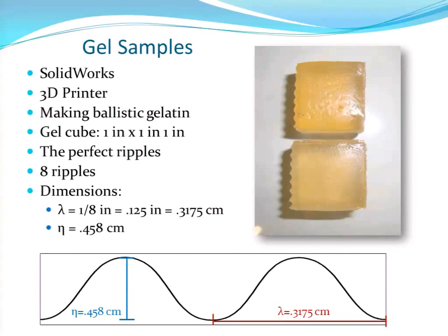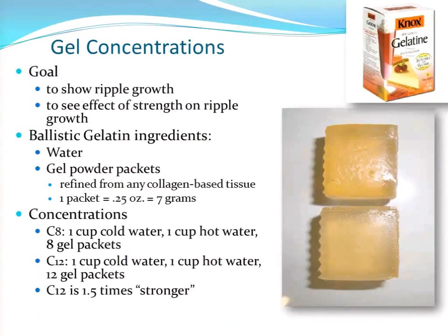This shows the different samples we used. The summer intern learned SolidWorks and built basically a fancy ice cube tray with ripples on the bottom — that's how we made the samples. We just played with different concentrations of the gel, and in the end picked two different concentrations to use for the tests.